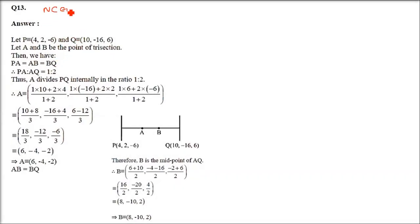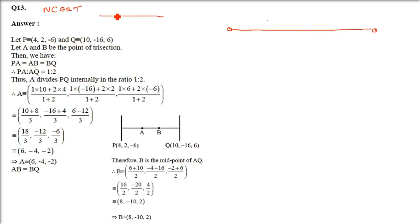Question number 30. This is also a NCERT question. Find the coordinates of the points which trisect the line segment joining (4, 2, -6) and (10, -16, 6). Trisecting means dividing the line into three equal parts, so we need to find two points. First time use the ratio 1:2, second time use the ratio 2:1.